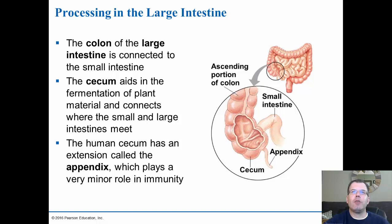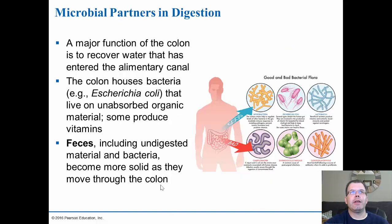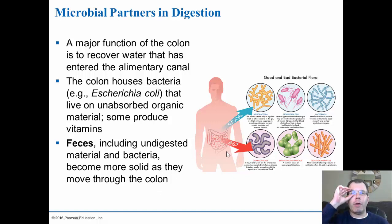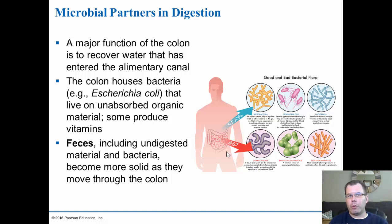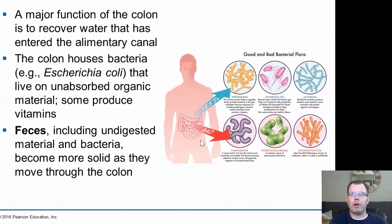The main function of the large intestine is to absorb water from the food material passing through. Bacteria in the colon help digest unabsorbed organic material and produce some vitamins. Feces making it through the large intestine include undigested material and bacteria, becoming more solid as water is absorbed. In diarrhea, the body secretes water — often from bacterial or other infections causing the intestines to secrete rather than absorb fluid. If output is very liquid, there may be problems with reabsorption or intestinal inflammation.